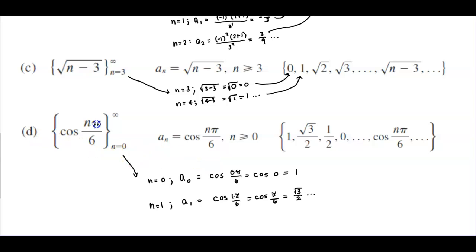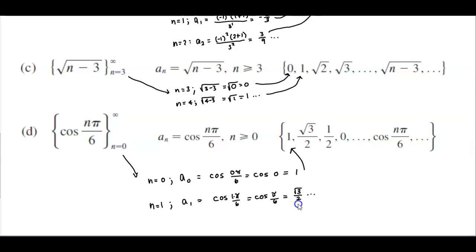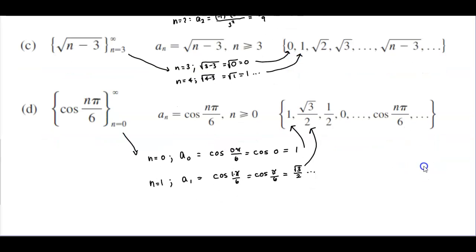In part d, we have the set of cosine of n times pi divided by 6 when n equals 0 going to infinity. When n equals 0, cosine of 0 equals 1, so that is the first term of the sequence. When n equals 1, a subscript 1 — the second term — equals cosine of 1 times pi over 6, which is cosine of pi over 6, equal to the square root of 3 over 2. We would continue on to determine the rest of the sequence.